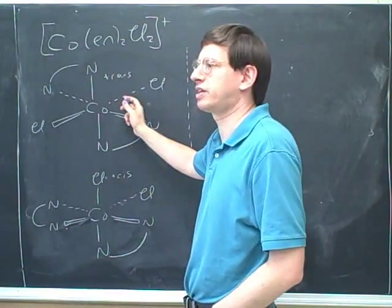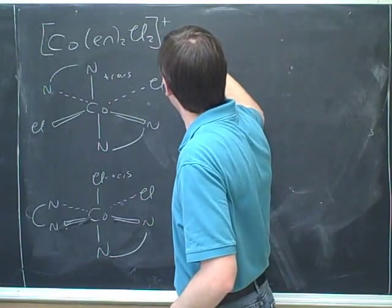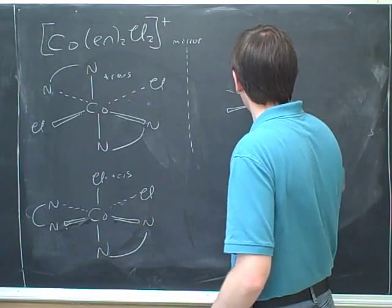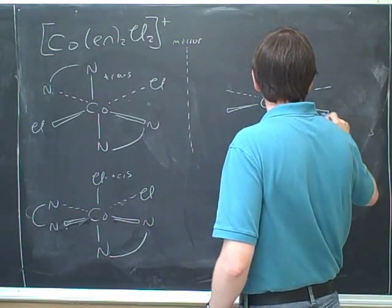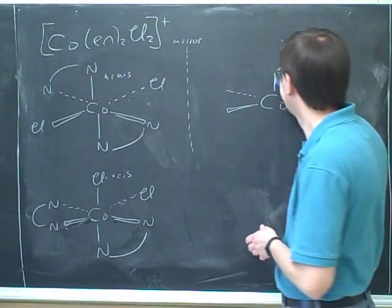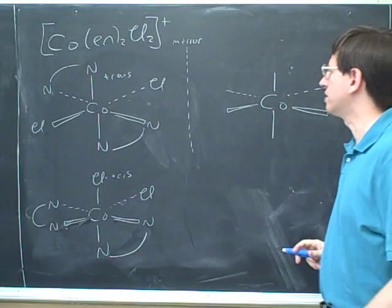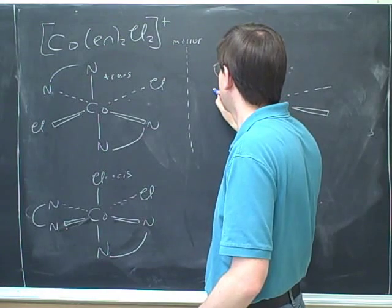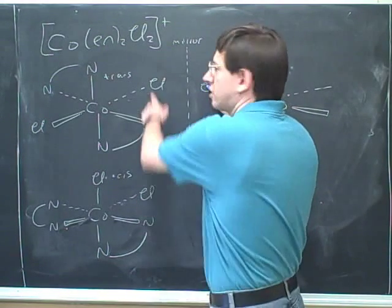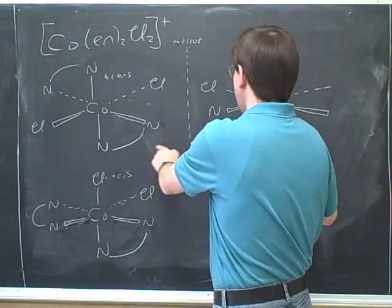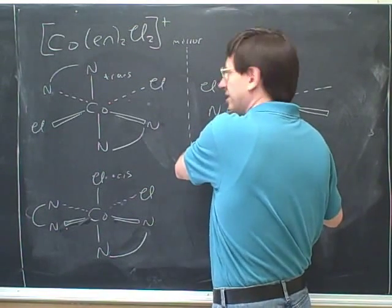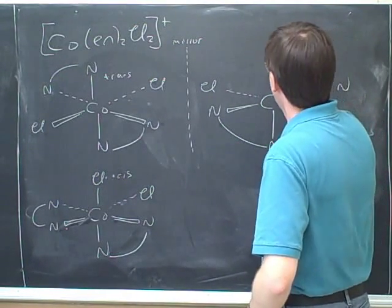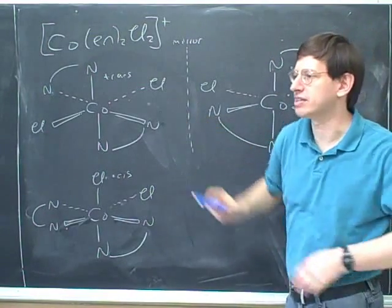So, let's try drawing the mirror image of this compound. Let's say that this is the mirror. Let's do this together to save time. If this is the mirror, what atom goes here? Chlorine. And how about here? N. And how about here? N. And these should be bound. And here? Cl. And here? N. And here? N. And these should be bound. So this is the mirror image of this.